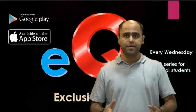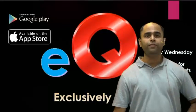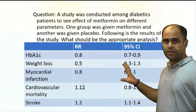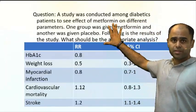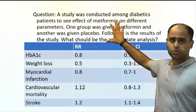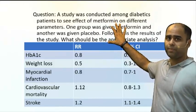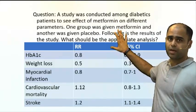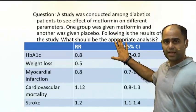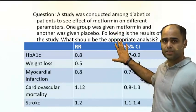I'm Dr. Siddharth, a public health specialist, coming up with a question on confidence intervals — a very popular and important topic for the AIIMS exam. A study was conducted among diabetic patients to see the effect of metformin on different parameters. One group was given metformin and the other was given placebo. Here is the analysis — what should be the appropriate interpretation?